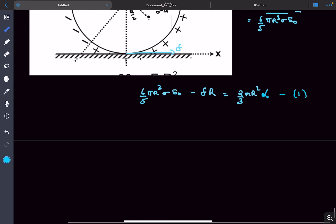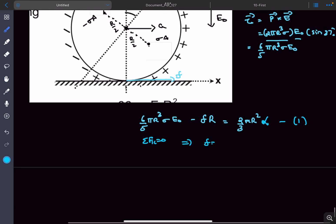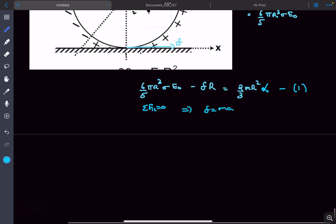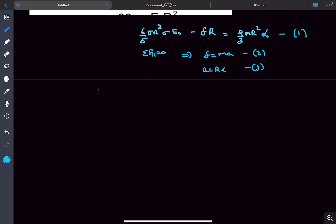Equation 2 is f = ma, because there's no electric force in the vertical direction. Since the hemisphere is pure rolling, a = Rα. Eliminating α from equation 1 gives the value of friction.